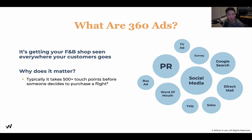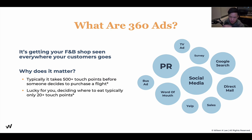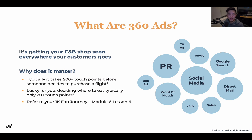Why does it matter? Because typically it takes 500 different touch points for anyone to make a decision to purchase a flight. That's how much they need to see you and see something relevant before they decide to purchase. So imagine how many times a human needs to think about it - 500 times. But lucky for you, deciding where to eat typically only takes 20 different touch points. If you don't understand touch points or the one K fan journey, go back to module six, lesson six for a refresher.